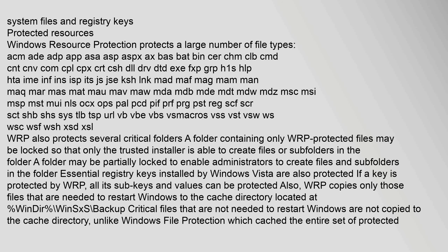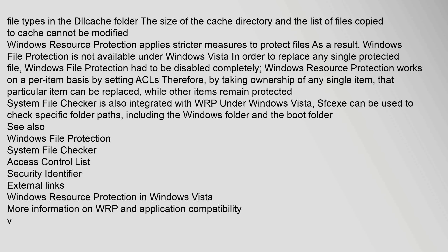WRP copies only those files that are needed to restart Windows to the cache directory located at %windir%\WinSxS\Backup. Critical files that are not needed to restart Windows are not copied to the cache directory, unlike Windows File Protection, which cached the entire set of protected file types in the DLL cache folder. The size of the cache directory and the list of files copied to cache cannot be modified.